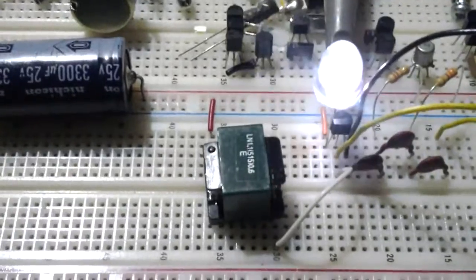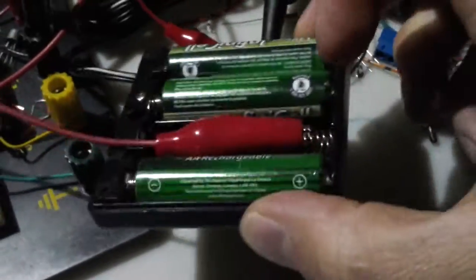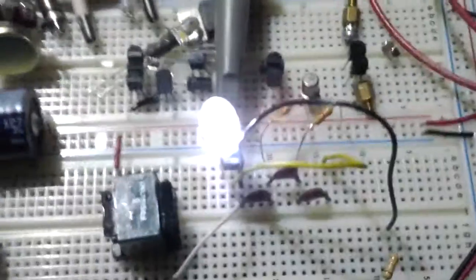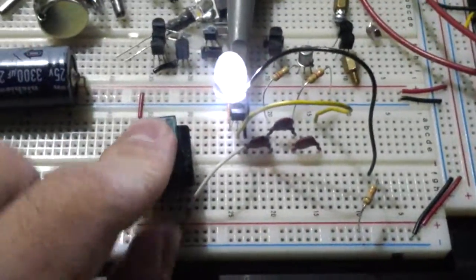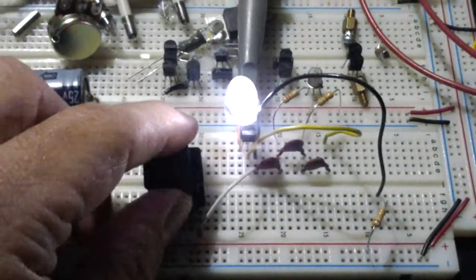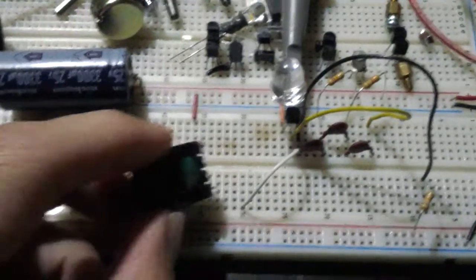I have my one millihenry coil, a little diode here, and here is the circuit working. Powering off my little trusty 1.5 volt battery.